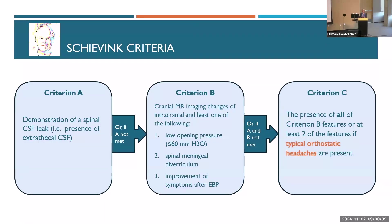I'm sure you're all aware there are some criteria for diagnosis of SIH, or spontaneous intracranial hypotension, and Dr. Shevink has been very kind to us and given us a very simple way to approach it. Criterion A is that there's a leak. And then criterion B is if you don't see a leak, then you'd find one of these other features. And criterion C is that you have some of those features and an orthostatic headache. So he's given us the most common symptom.